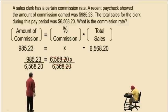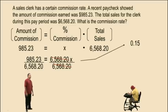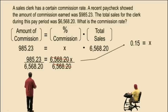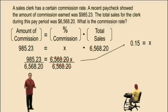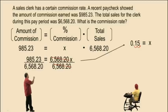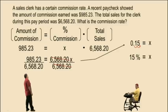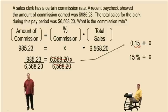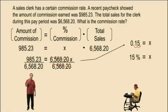To solve for x, divide both sides by $6,568.20, and you end up with 0.15 for x. Remember, x represents percent commission, so we need to report a percentage. We convert that decimal to a percent by moving the decimal two places to the right — that's 15%. That completes sales tax and commission. Let's take a break and I hope to see you again soon.